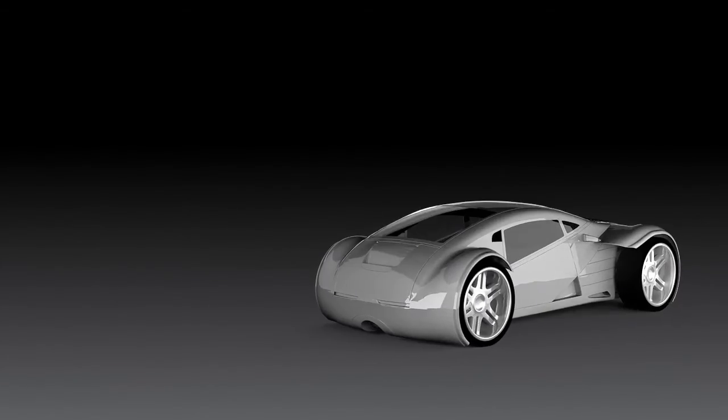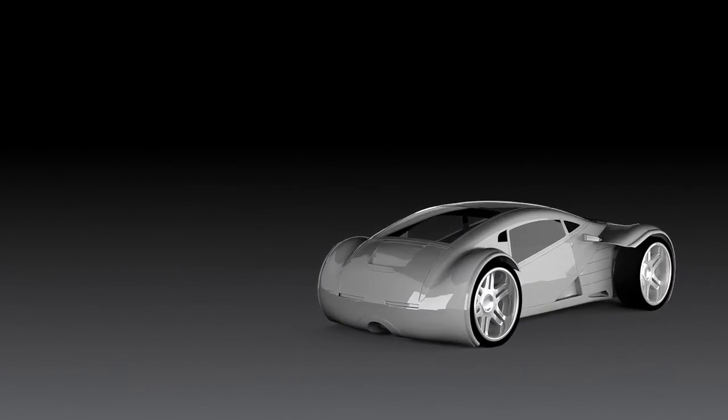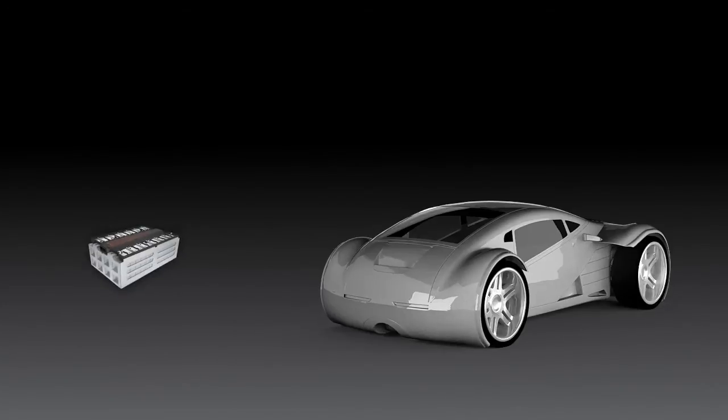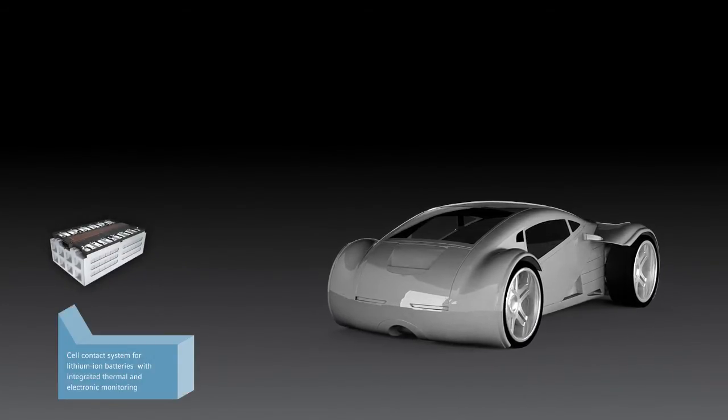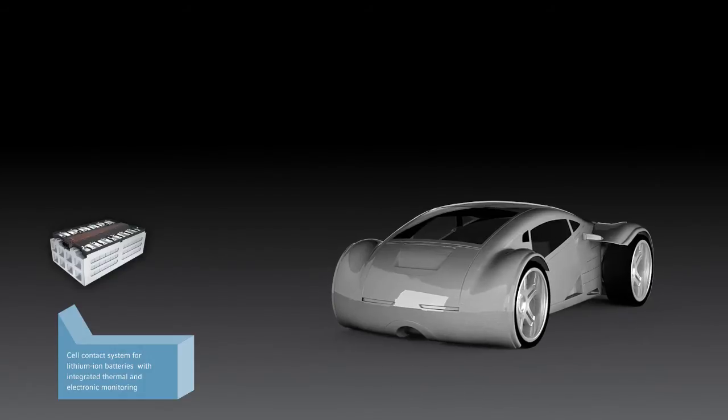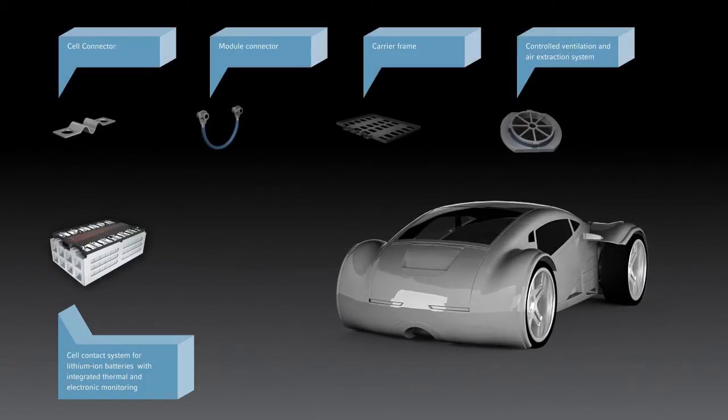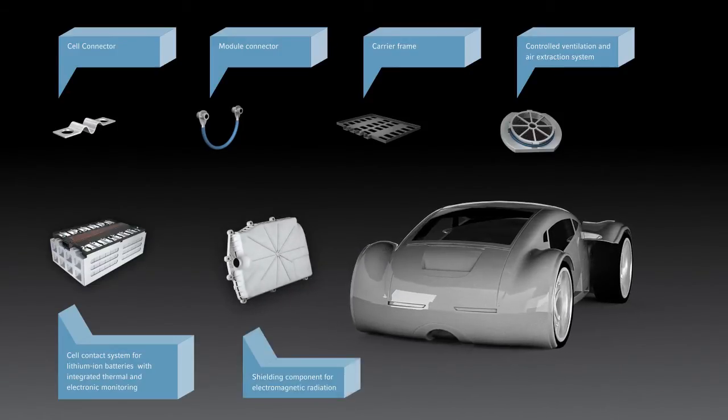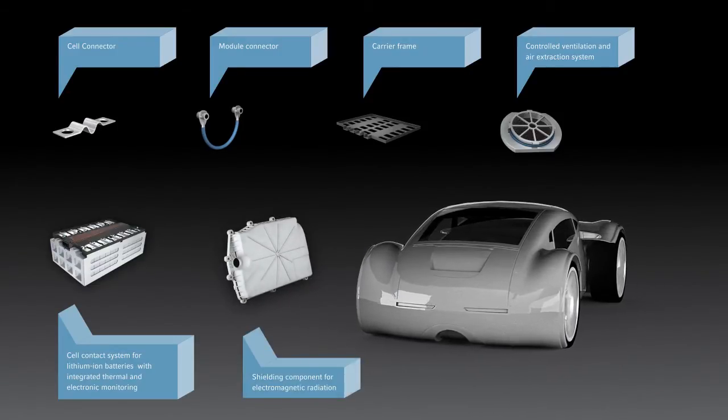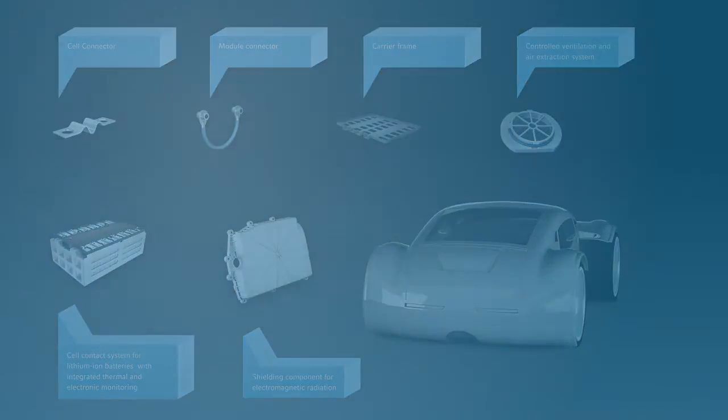Elring Klinger benefits today from the early work of its e-mobility division. The company supplies intelligent cell contact systems for large battery stacks and cylindrical and prismatic designs. These consist of cell connectors, a control interface and cell carriers for cells. These products are joined by pressure equalization and sealing systems for the batteries of electric vehicles.